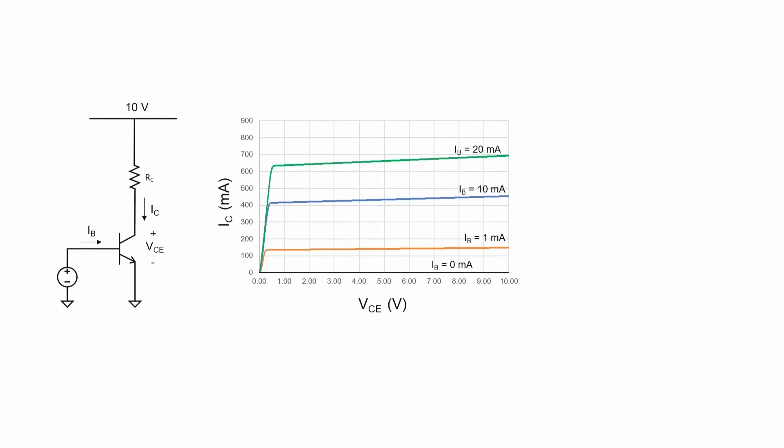Our strategy for designing a current source is going to make use of the fact that the lines on this curve are pretty much flat. Look at what happens as we change the collector voltage on this transistor. The collector current more or less stays the same over a very large range of collector voltages. The fact that it's flat is advantageous because that's exactly what a current source does. An ideal current source gives you the same current regardless of the voltage. That's what we have here.